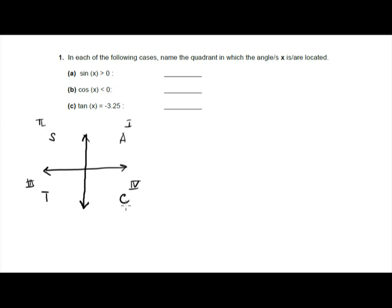So in part A, it says sine x is greater than zero. Something greater than zero means it's positive. So sine is positive in the first because everything is positive here, and since this is S on the second quadrant, it means sine is also positive in the second quadrant. So the answer for letter A is quadrant one and quadrant two.